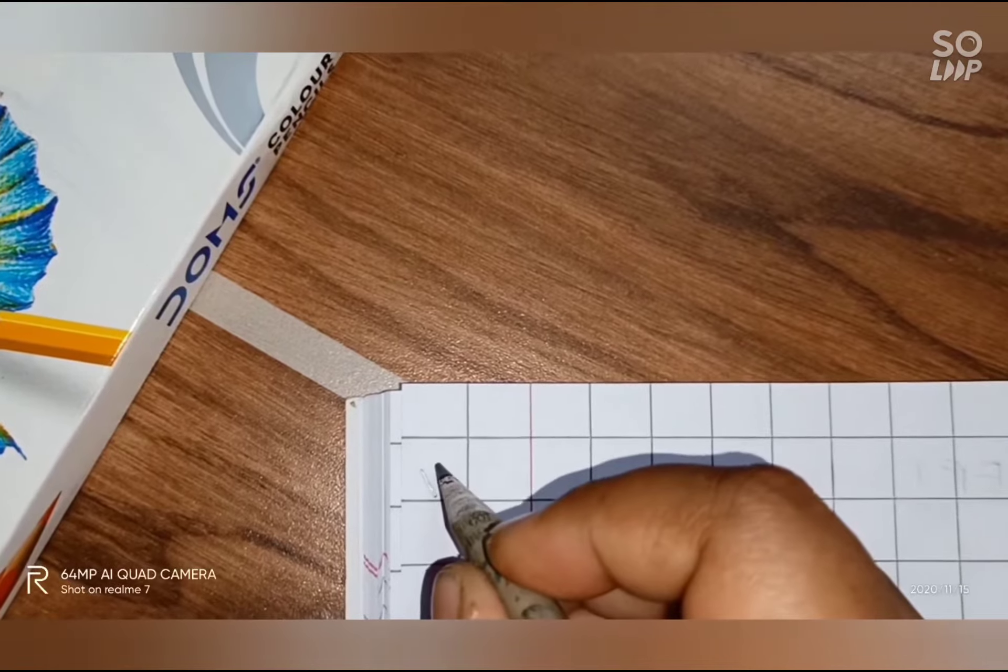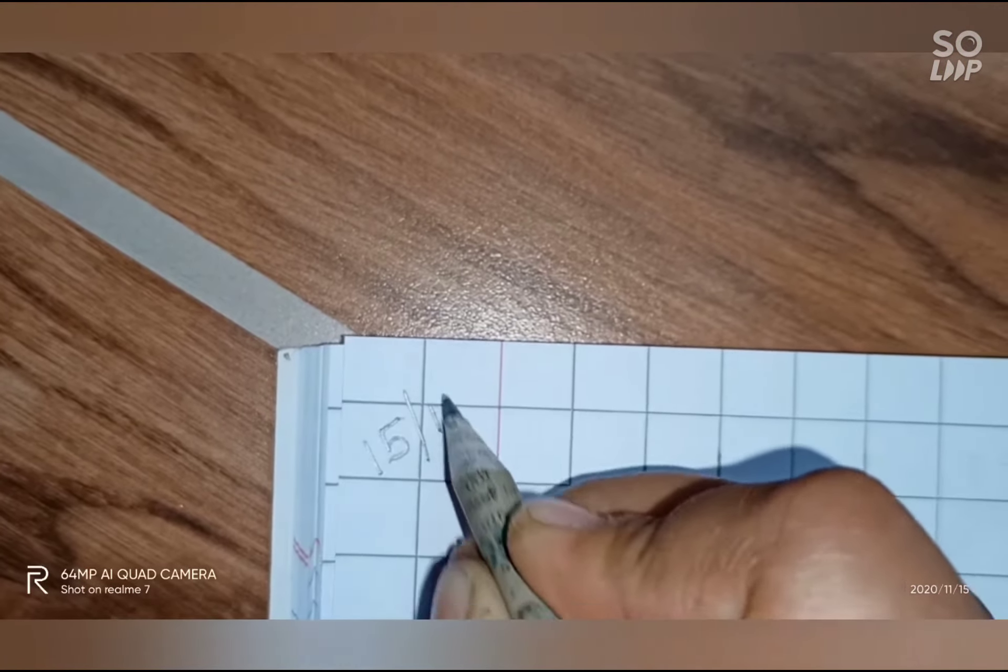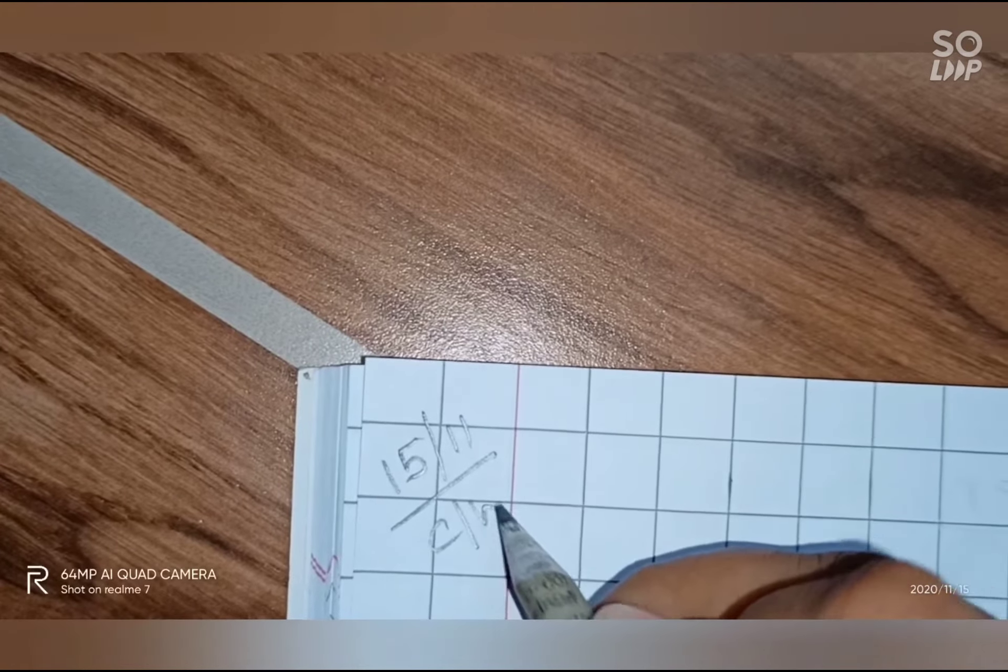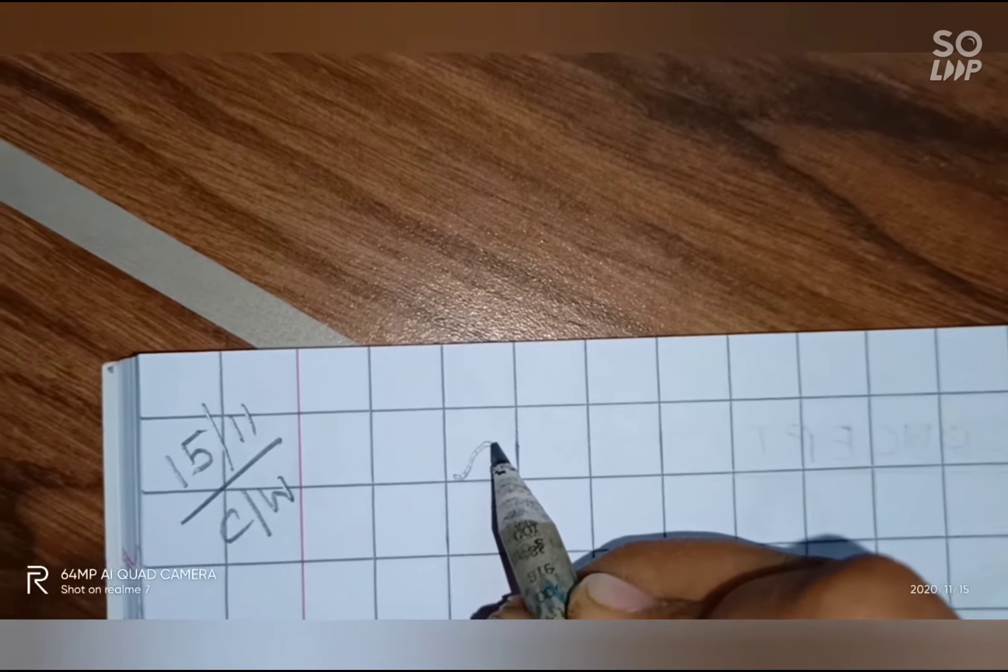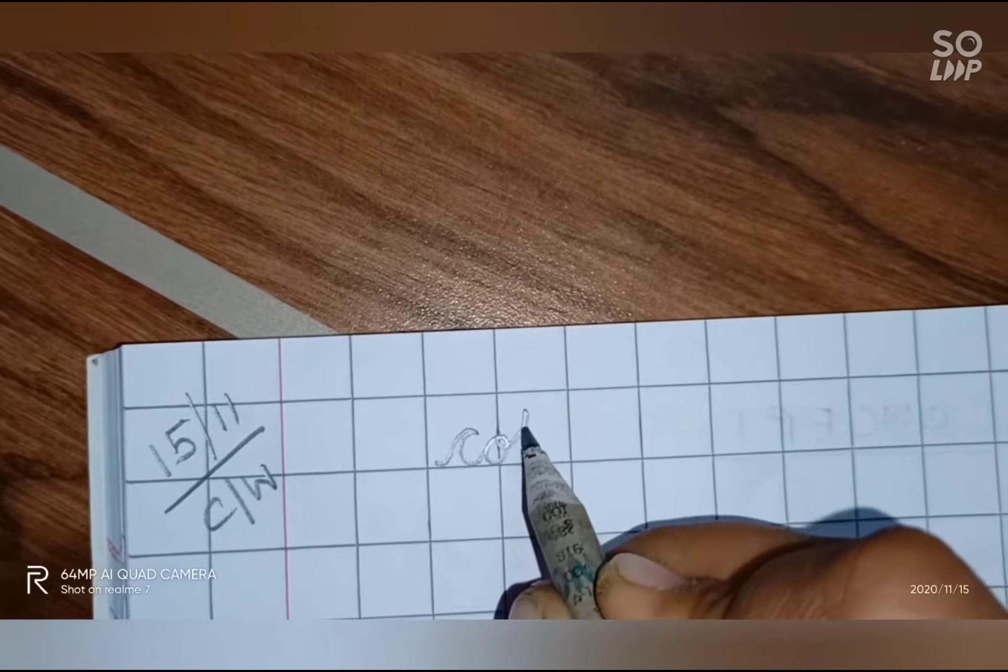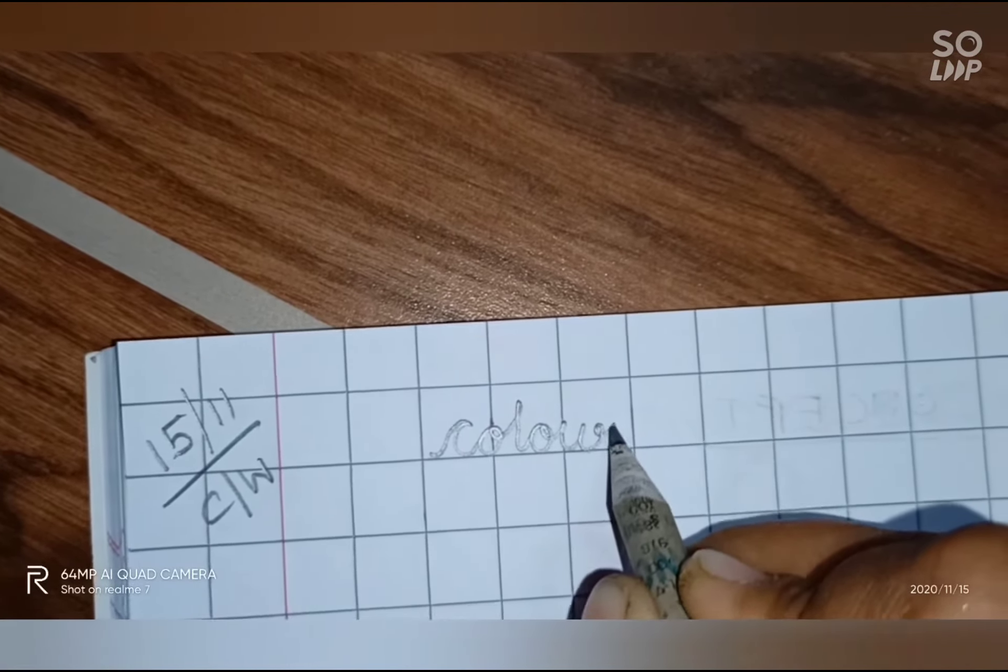At first, we will give today's date. Then, write classwork. Give the heading. We will write in cursive. We will join the letters like this: C-O-L-O-U-R. Color.